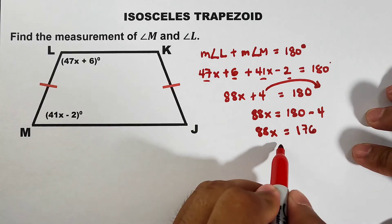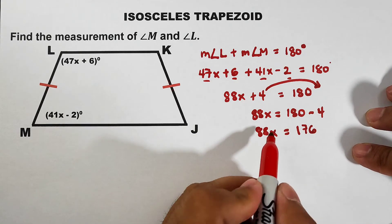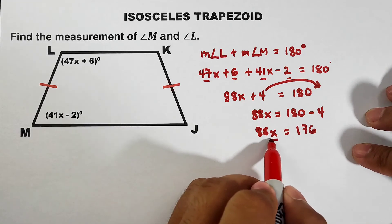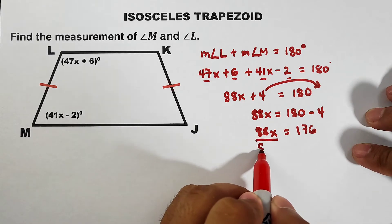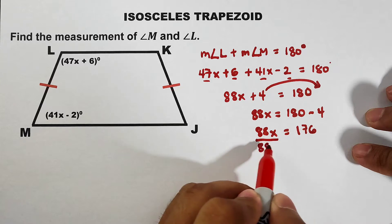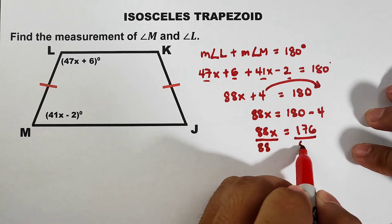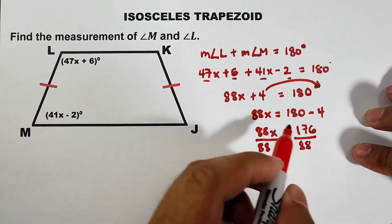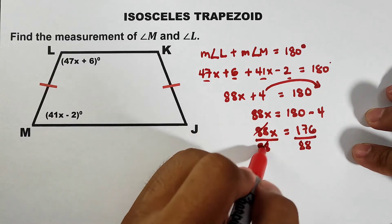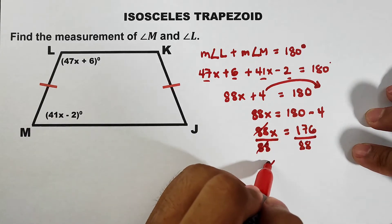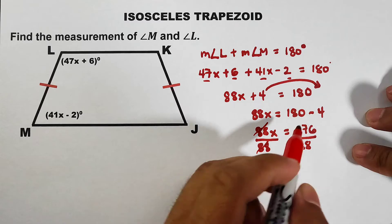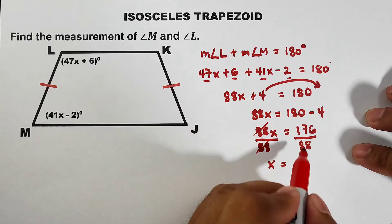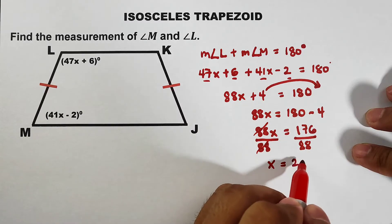So right now, to solve for x, we can divide both sides by 88. Cancel, cancel. Your x is equal to 2.